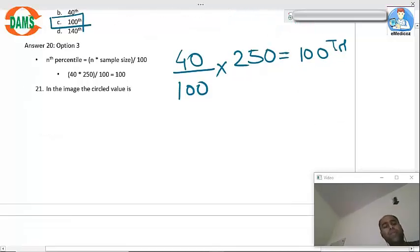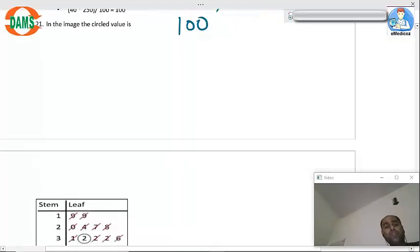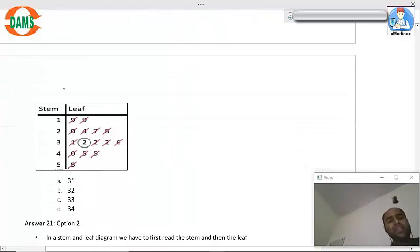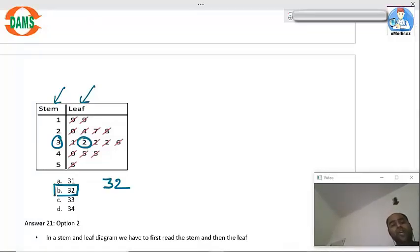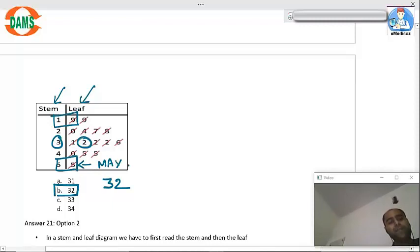Now let us look into the image-based question. Now what is this? This is a stem and leaf diagram. Now what is this encircled? 3, 2, 32. So remember in a stem and leaf, it is very simple. You have to first read the stem and then the leaf. So there can be other questions: maximum value 55, minimum value 19, mode 32.